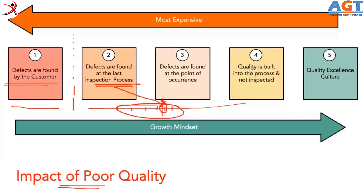There can be a fourth scenario where quality is built into the process and not inspected. The machine itself is designed to produce the right quality. If the machine is not functioning well, it will stop and prevent production of any bad quality product. This is what we call quality built into the process — also called Jidoka, the second pillar, which is called built-in quality.